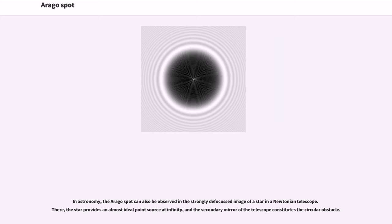In astronomy, the Arago spot can also be observed in the strongly defocused image of a star in a Newtonian telescope. There, the star provides an almost ideal point source at infinity, and the secondary mirror of the telescope constitutes the circular obstacle.